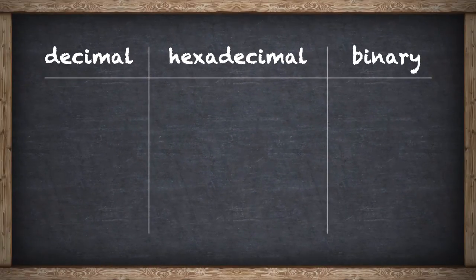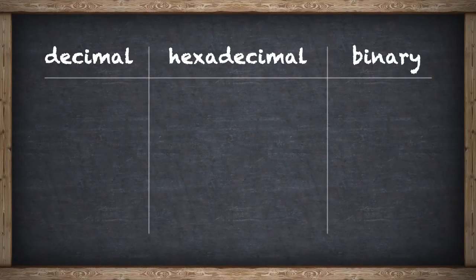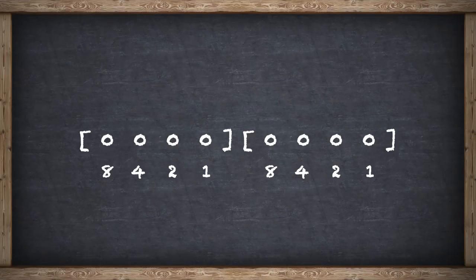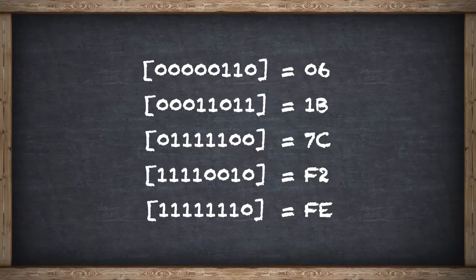You might be wondering why we even use hexadecimal. Well, if we go back to our 8-bit binary number, we can actually split this up into two halves. We can put four bits on one side and four bits on the other. Each grouping of four bits is called a nibble, and one nibble is a single hexadecimal digit. Here's what it looks like to convert some binary numbers into hexadecimal numbers.